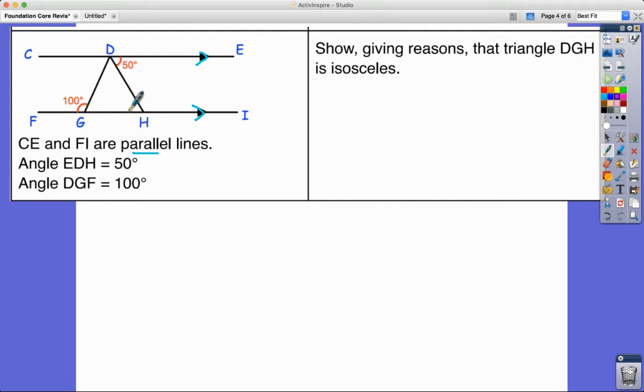Show giving reasons that triangle DGH, so this one here in the middle, is isosceles. We've already established earlier on in this lesson that an isosceles triangle has base angles that are equal. That's what I think we're looking for because we've got angles given and I'm sure we can use our knowledge of angle rules to work out other angles. This is a good starting point because I can see 100 degrees here. We know the angles on a straight line add up to 180 degrees, so this must be 80.